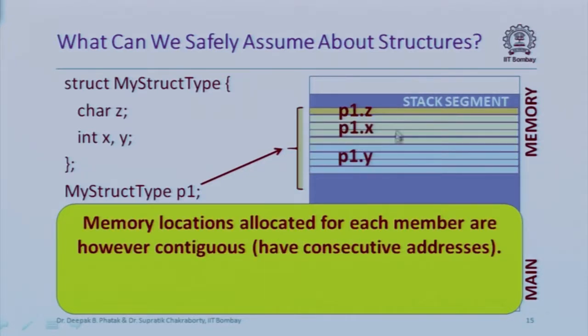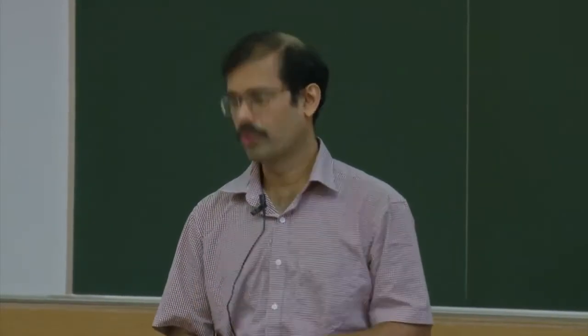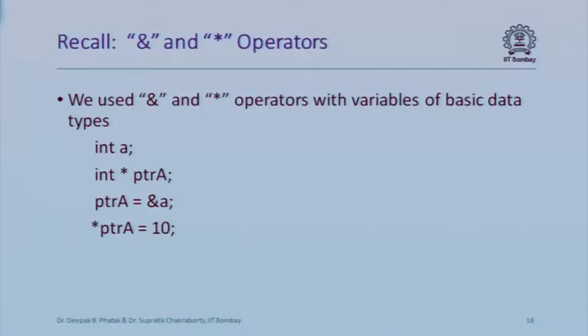The four bytes allocated for a particular integer member will be contiguous — the bytes for p1.x won't have padding between them; they're treated as a single integer. However, between members X and Y there could be padding, and Y could appear before X. Always access members only through the dot operator.